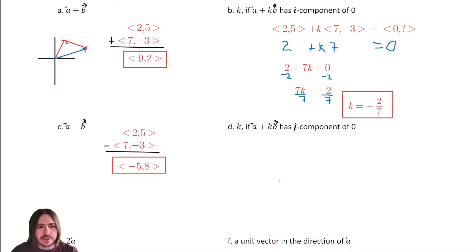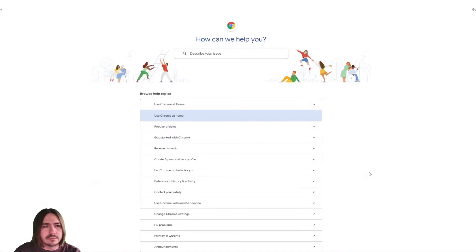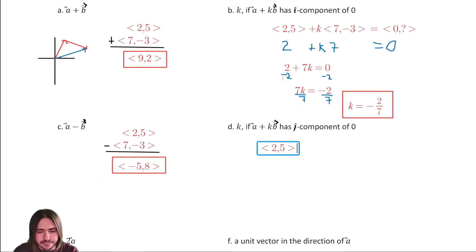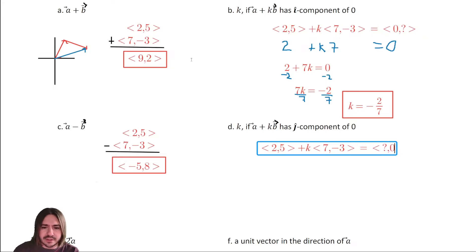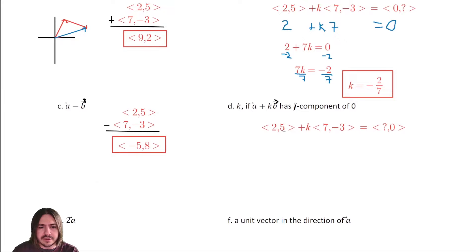Setting up the equation: A is two comma five, plus K times B which is seven comma negative three, and we want that to equal a vector where the j-component is zero. Since we're only looking at the j-component, the equation is five plus K times negative three equals zero.